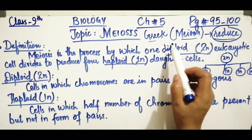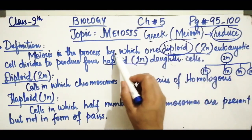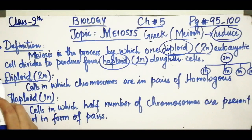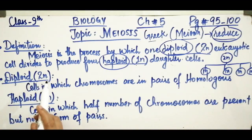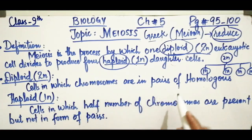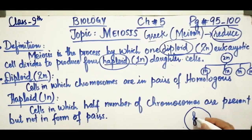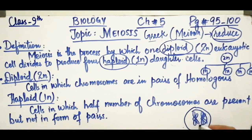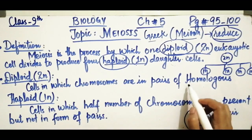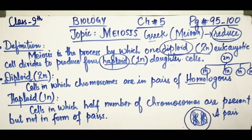The first term is diploid, represented by 2N. Diploid refers to cells in which chromosomes are present in the form of pairs of homologous chromosomes. For example, if you have a chromosome and you get another chromosome that looks like it, they form one pair. This pair of chromosomes is called a homologous chromosome pair. They are called homologous because they look the same as each other.